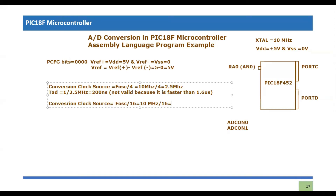So I'm going to try a different scaling factor for the conversion clock source: Fosc/16. With 10 MHz divided by 16, it becomes around 625 kHz. The TAD would then be 1/625 kHz, which equals around 1.6 microseconds — which is the exact threshold value.